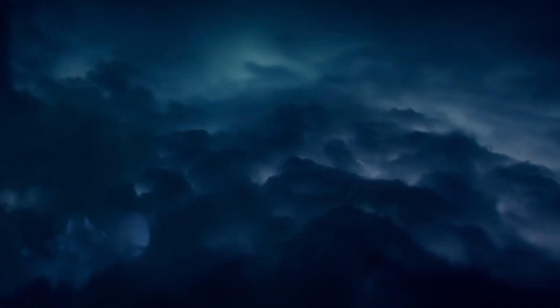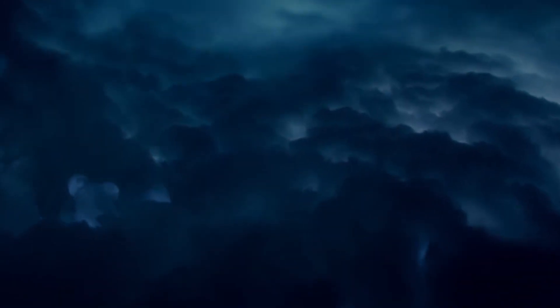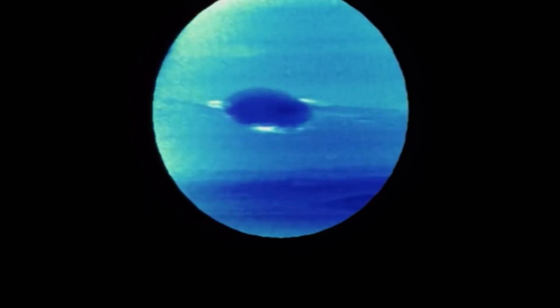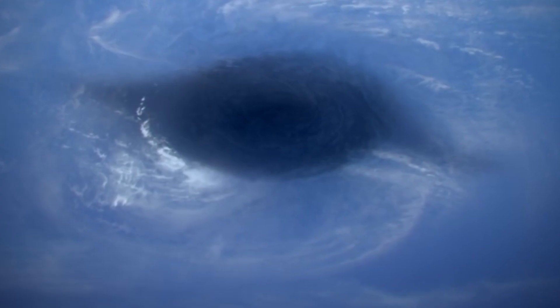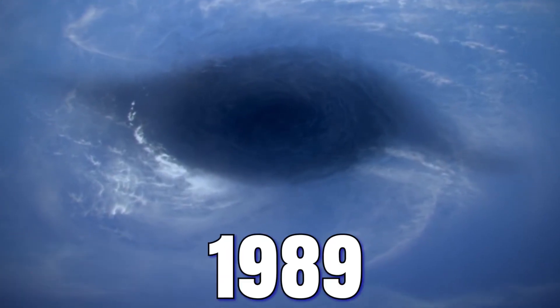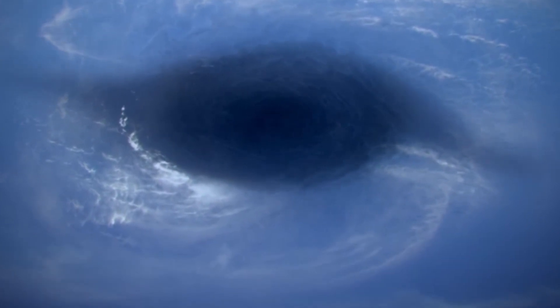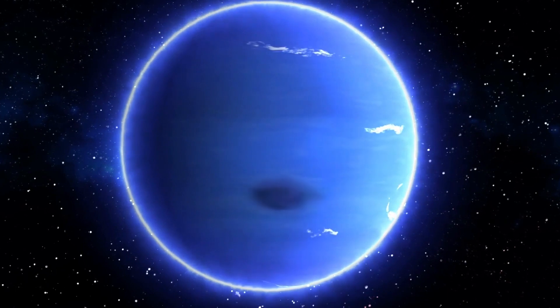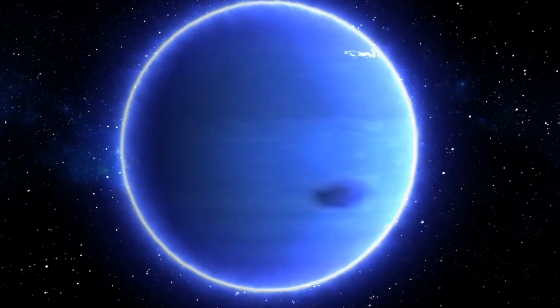Neptune is also the windiest planet in our solar system, with winds up to nine times stronger than Earth's. These winds sweep clouds of frozen methane across the planet at rapid speeds of over 1,200 miles per hour. Neptune also has its own storm, the Great Dark Spot, which was discovered in 1989 and could contain the entirety of Earth. While the original storm has disappeared, new ones have appeared in different areas of the planet.